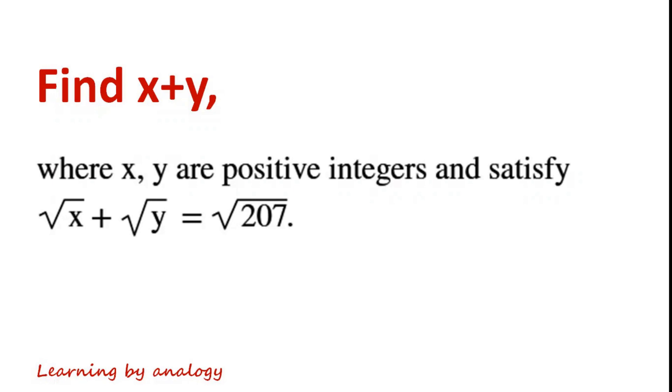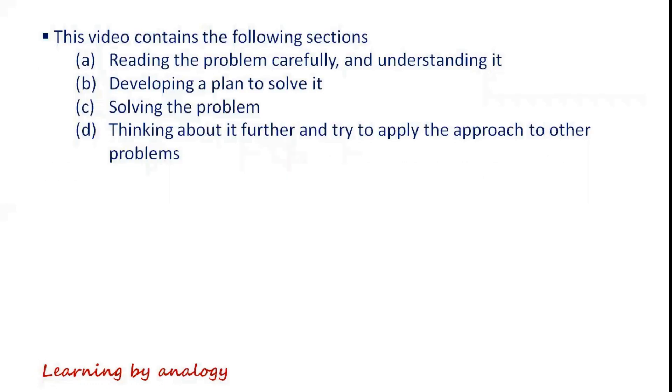Find x plus y where x, y are positive integers and satisfy √x + √y = √207. This video contains the following sections: